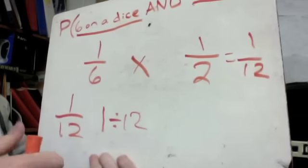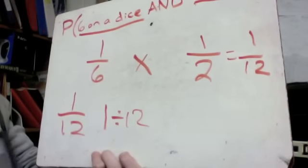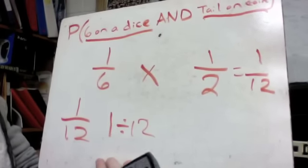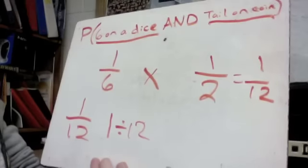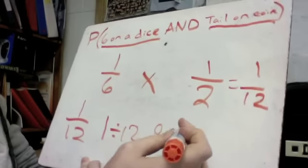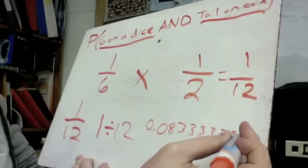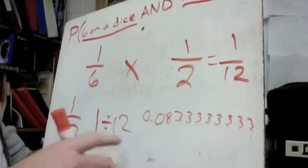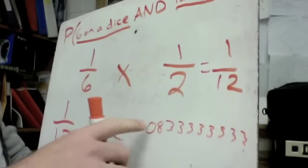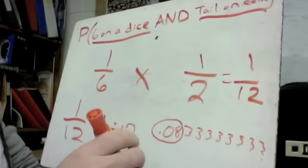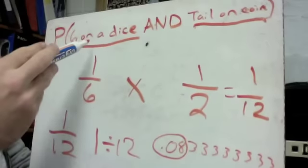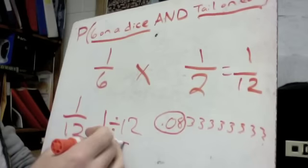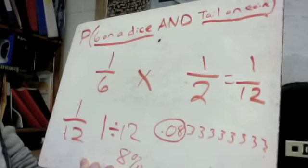We haven't talked about dividing decimals, so just grab your calculator. Put in one divided by 12, and I get 0.08333. To find the percentage, just take the first two decimal digits — that's 8%. So our chances of getting a six on a dice and a tail on a coin, flipped back to back, is about an 8% chance.